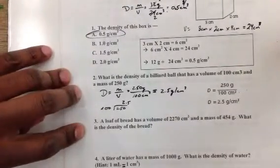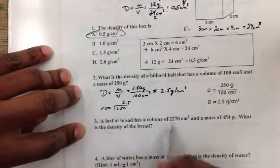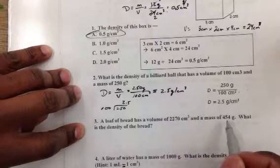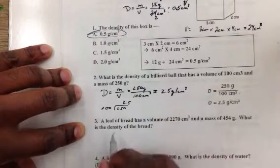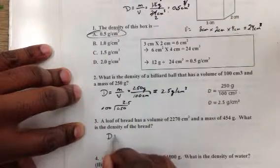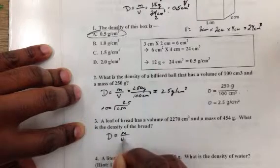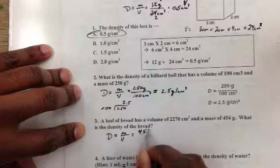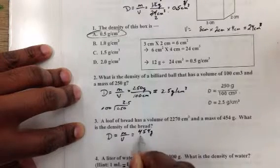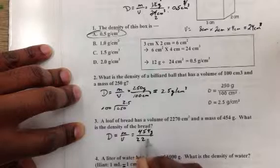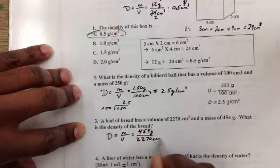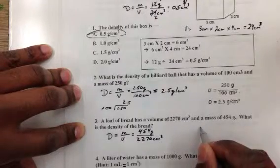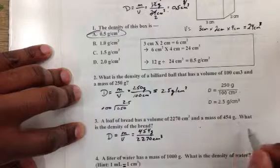Let's do another example here. It says the loaf of bread has a volume of 2,270 centimeters cubed and a mass of 454 grams. What's the density? We already know from doing our previous examples that our formula is density equals mass divided by volume. My mass, as it says there, is 454 grams, and that's going to be divided by 2,270 centimeters cubed.